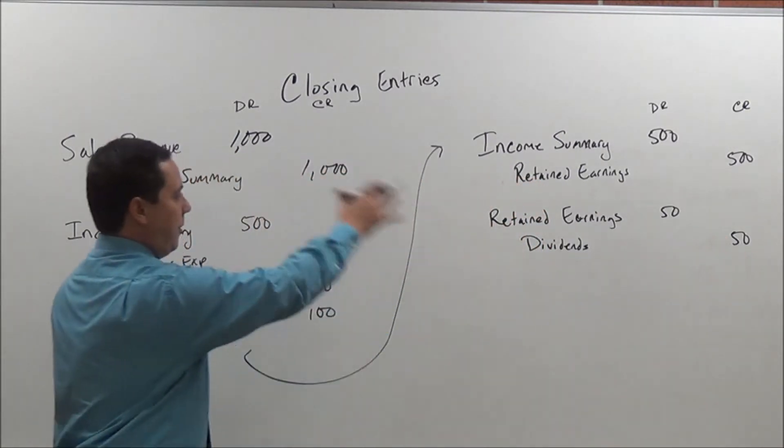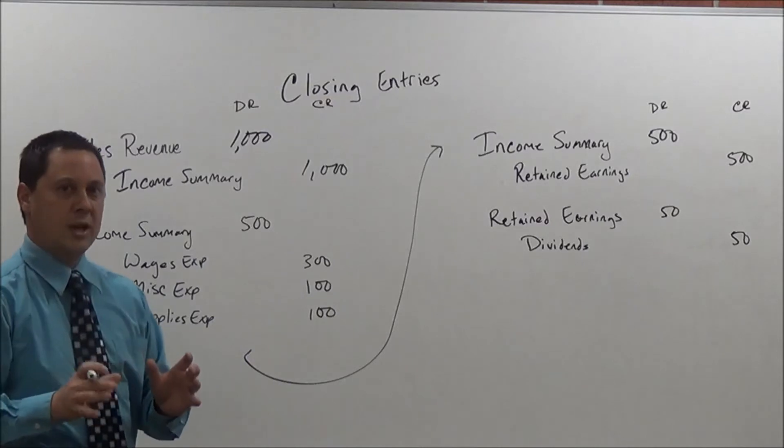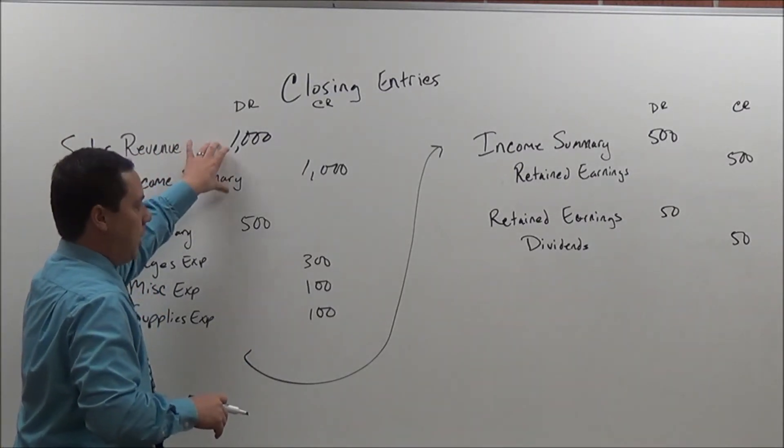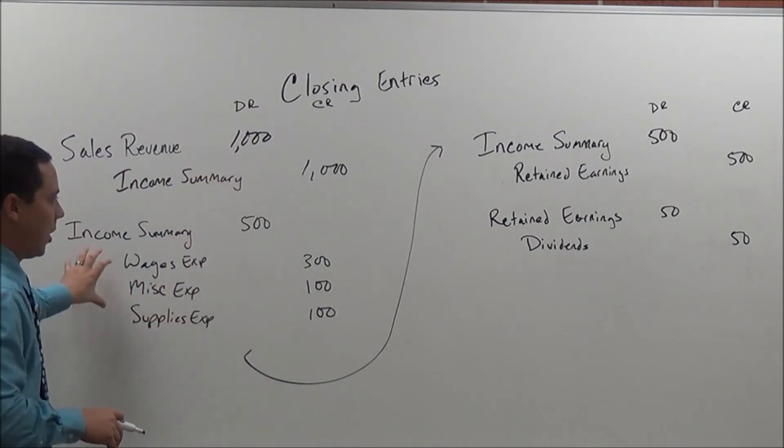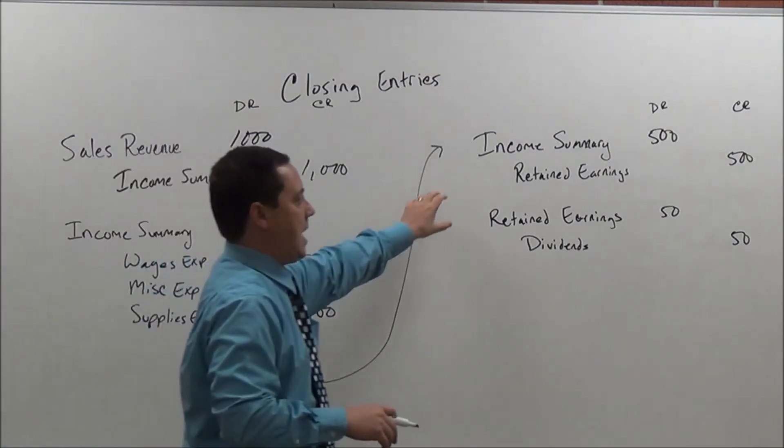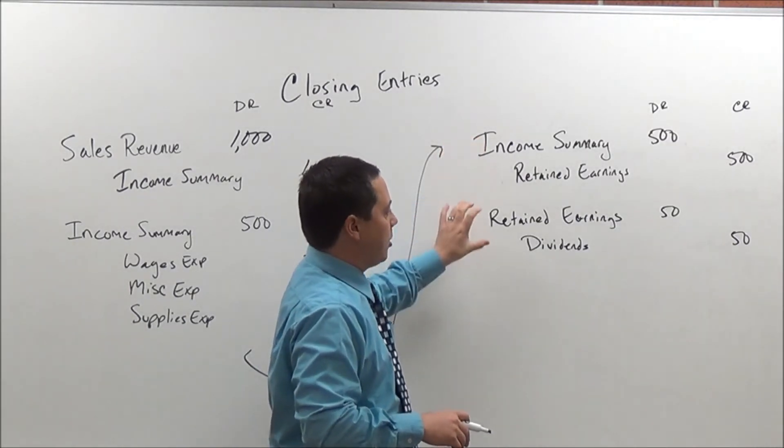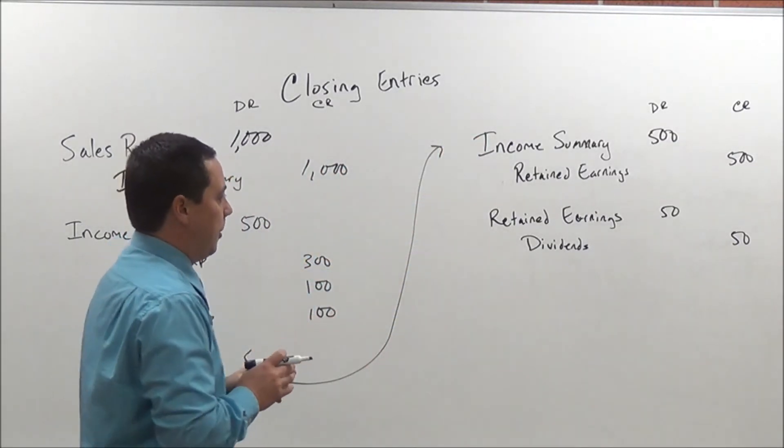So if I look and review all this here, those are the four transactions that we have to make. We first start with our sales. We remove those sales. We then go to our expenses. And then we take any income or loss. And then we close that out. And then we close out our dividends. Those are the four things that we do.